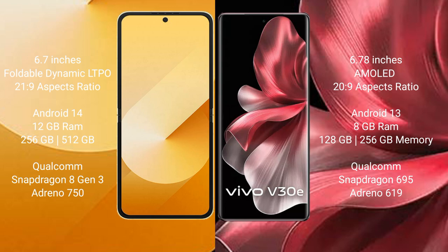Samsung Galaxy Z Flip 6 comes with 12GB RAM and 256GB or 512GB internal storage, with a Snapdragon 823 processor and Adreno 750 GPU. VOV29E comes with 8GB RAM and 128GB or 256GB internal storage, with a Snapdragon 695 processor and Adreno 619 GPU.